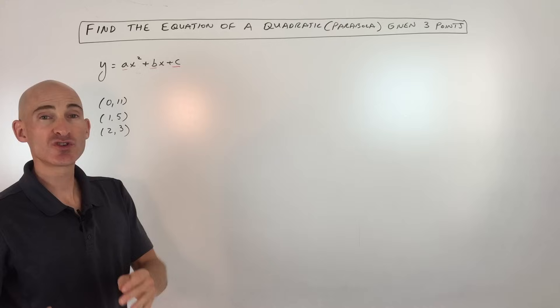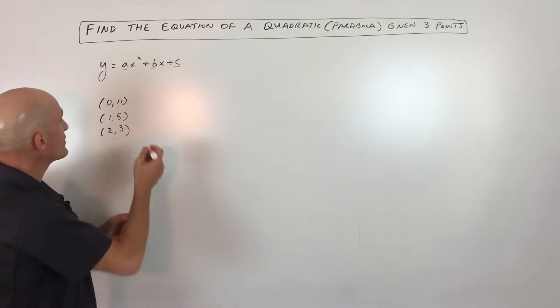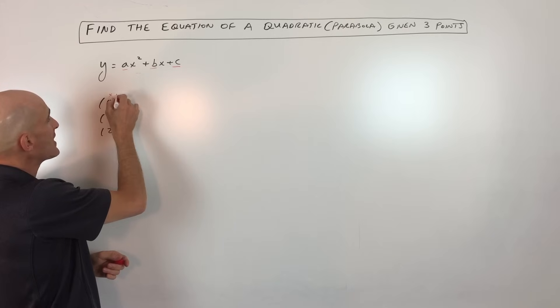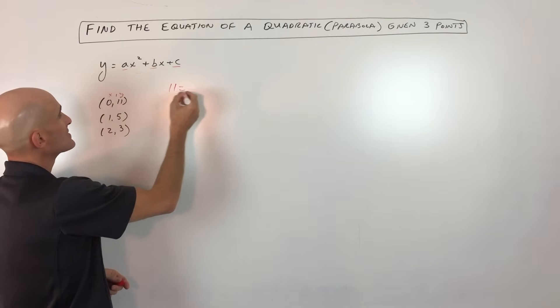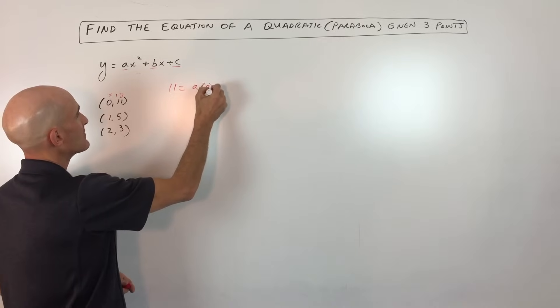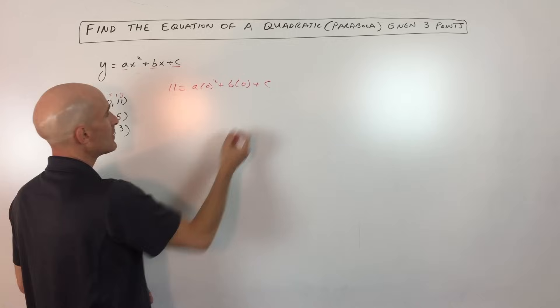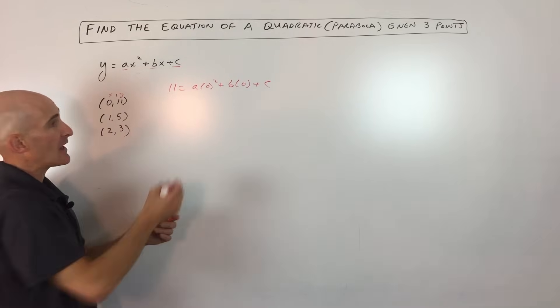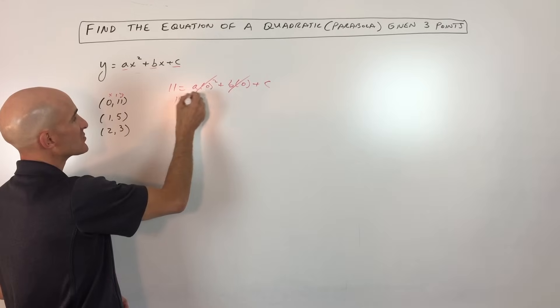To solve for three variables, we need to have three equations. So let's see if we can write the three equations. These are our x and y values. So when y is 11, x is 0. So that's going to be a times 0 squared plus b times 0 plus c. And you can see that anything times 0 is going to be 0. So we've already solved for c. So c is 11.